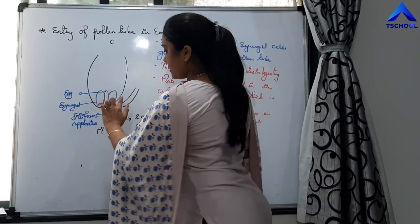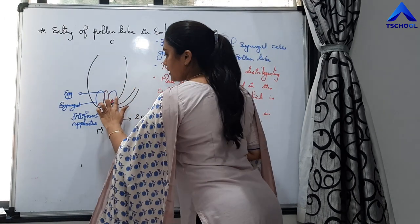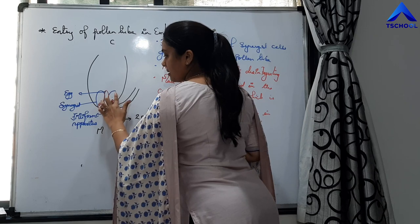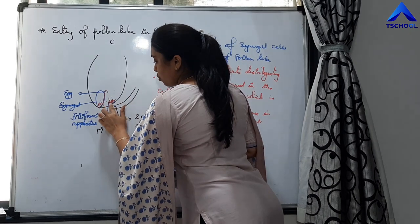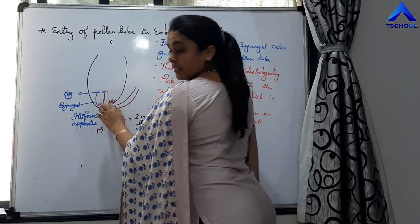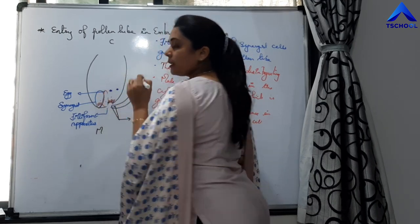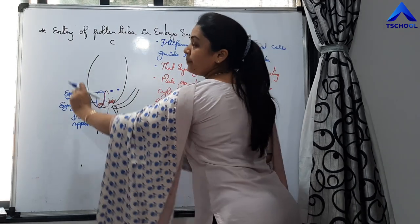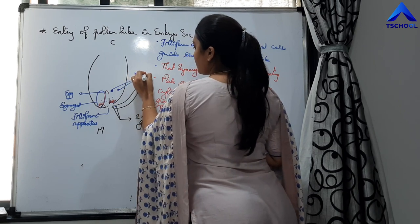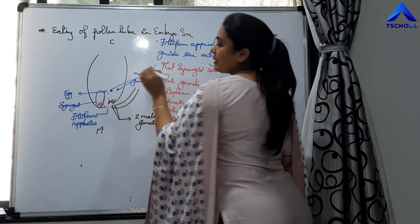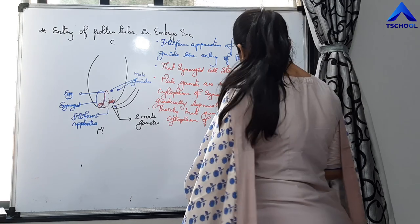The synergid cell in which the pollen tube has entered gradually starts degenerating. Ultimately, the two male gametes will be present in the cytoplasm of the central cell.